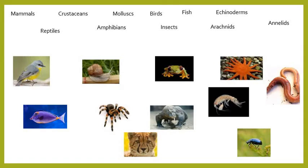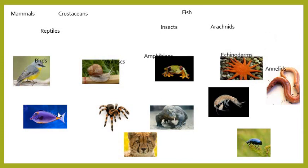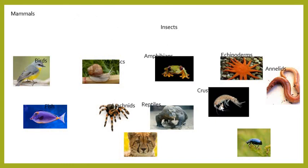Here we've got pictures of 11 different animals, each relating to one of the 11 classes written above. Pause the video and see if you can work out which class each animal belongs to. The answers: the bird, the mollusc, the frog is an amphibian, the starfish is an echinoderm, the worm is an annelid, a fish, an arachnid, a reptile — actually a Komodo dragon, a crustacean, a mammal, and finally a beetle which is an insect.